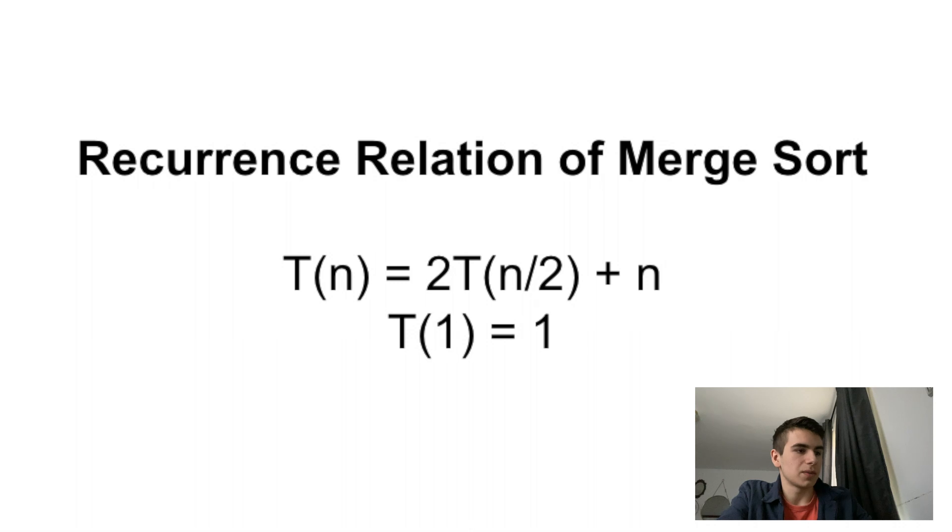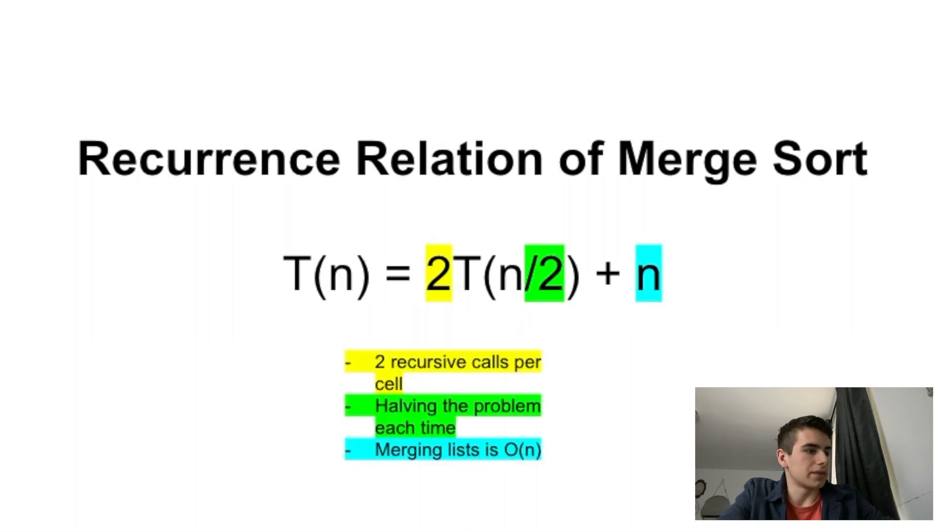What matters is this meaty thing with the twos and the plus ns and whatever. And it looks scary, but again, you can just break it down. The two in front of the T just represents the fact that you're calling two recursive calls. You're calling merge sort twice per recursion, obviously, because you're splitting your problem in half, which is what the n over two is telling you.